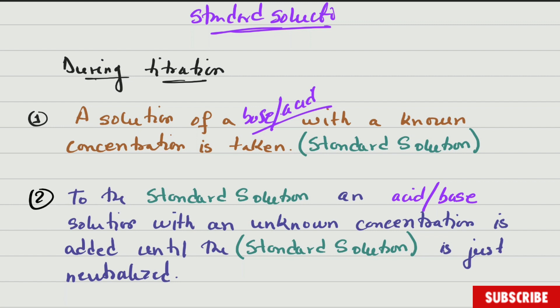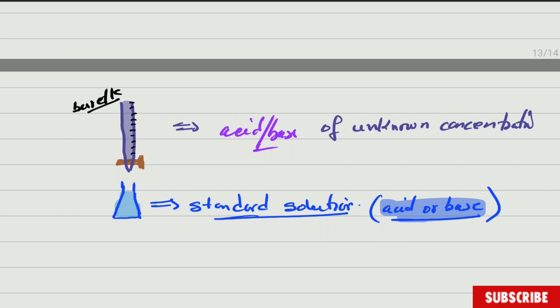To that standard solution, we are going to add an acid or a base — the one whose concentration we don't know. We are going to add that unknown solution up until the standard solution is just neutralized. So we have a conical flask with a standard solution — remember, that's an acid or a base — and a burette with the acid or base of unknown concentration.